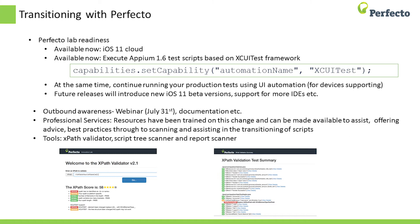This means that you can continue quality activities while starting to create new Appium 1.6 scripts or modifying existing ones. In order to test your script on XCUI Test, simply set the capability Automation Name to XCUITest. Moving forward we will support new iOS 11 beta versions as well as relevant IDEs.